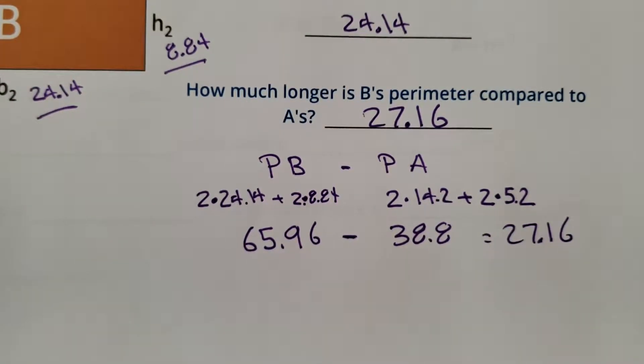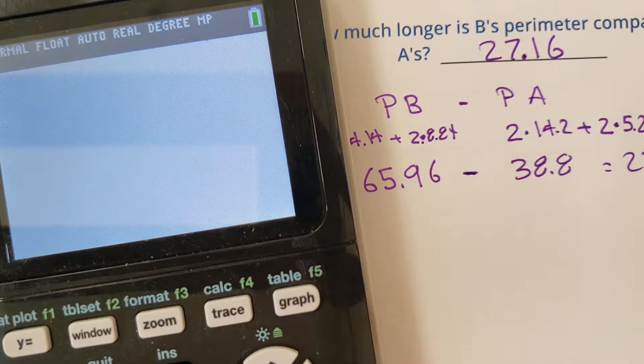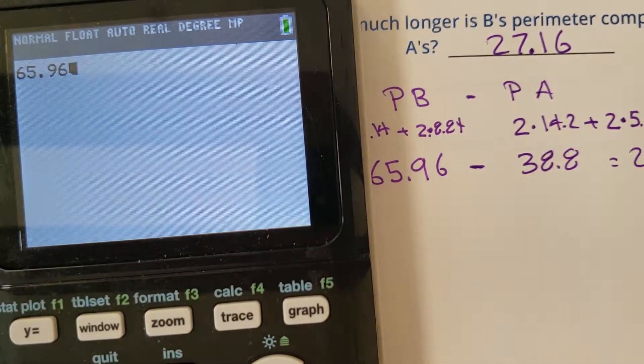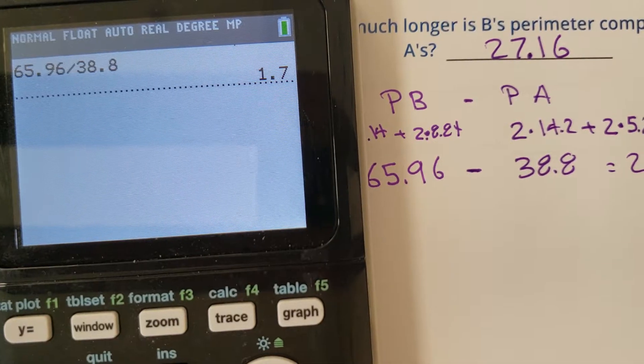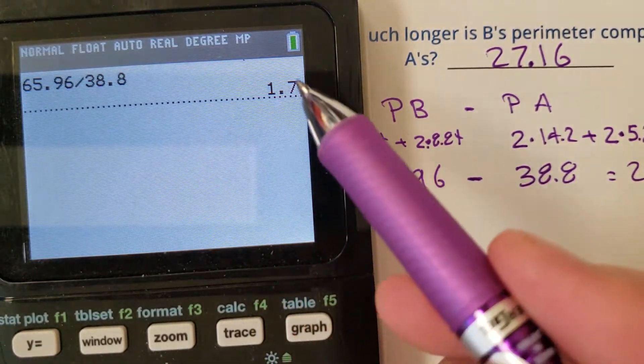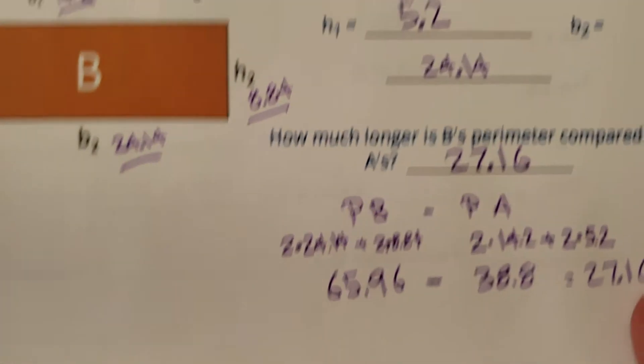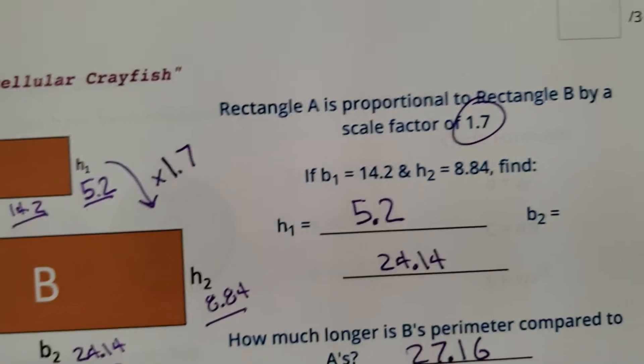If you want to see something crazy, watch this. I'm going to take B's perimeter, 65.96, and then I'm going to divide by 38.8. Spoiler. You ready for something crazy? Oh! What? What? Wow. Scale factor. Nice. Pretty cool, huh?